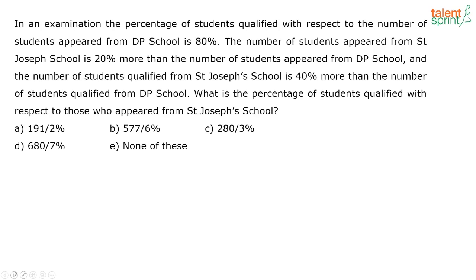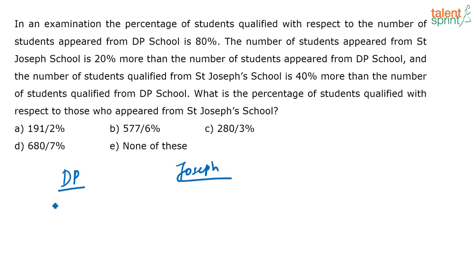So, the best way to solve this question is to take values. There are two schools given: DP school and St. Joseph's school. Now, the number of students who have appeared — let us take that as 100.